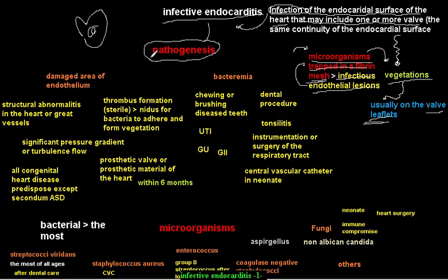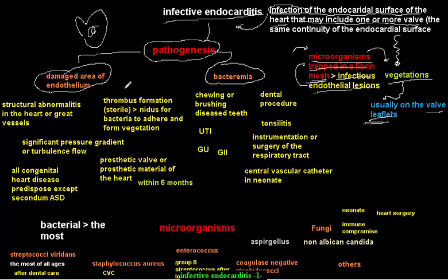Regarding the pathogenesis of endocarditis, to develop endocarditis you must have both conditions present: a damaged area of the endothelium of the heart, and bacteremia or septicemia. A normal heart will most of the time not develop endocarditis, but if there is a damaged area of endothelium, it becomes exposed to the risk of endocarditis.